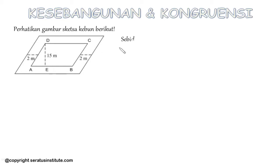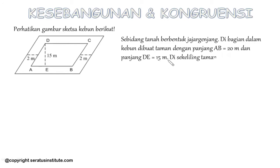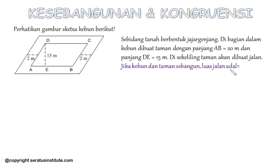Soalnya adalah: sebidang tanah berbentuk jajar genjang. Di bagian dalam kebun dibuat taman dengan panjang AB sama dengan 20 meter dan panjang DE sama dengan 15 meter. Di sekeliling taman akan dibuat jalan. Jika kebun dan taman sebangun, luas jalan adalah? Jadi yang ditanyakan adalah luas jalannya.